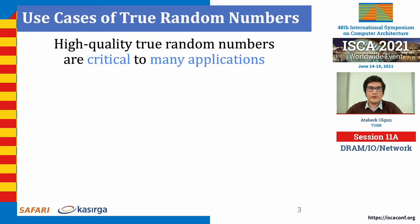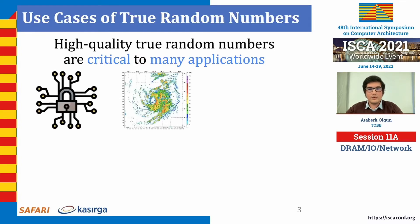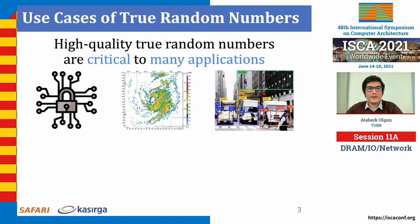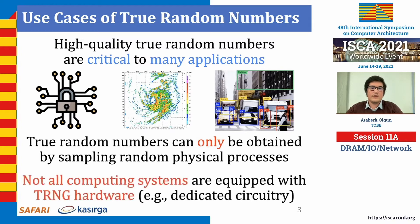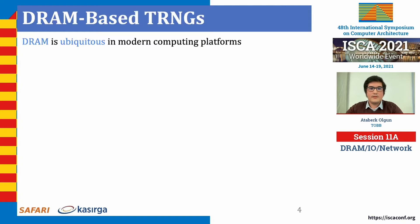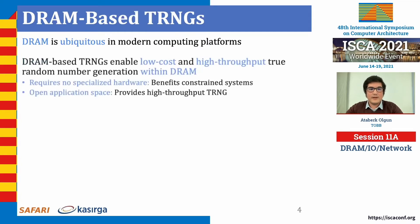High-quality true random numbers are critical to many applications, including cryptography, scientific simulations, and machine learning. True random numbers can only be obtained by sampling random physical processes, and unfortunately not all computing systems are equipped with dedicated TRNG hardware. DRAM, on the other hand, is commonly used as main memory in a wide range of computing systems. TRNGs based on DRAM enable low-cost and high-throughput random number generation within DRAM chips without requiring additional specialized hardware, making them beneficial in constrained systems.